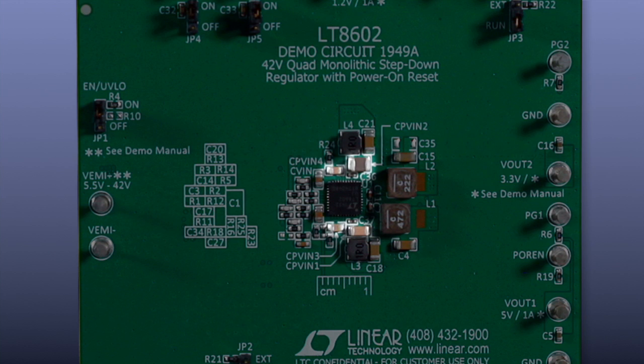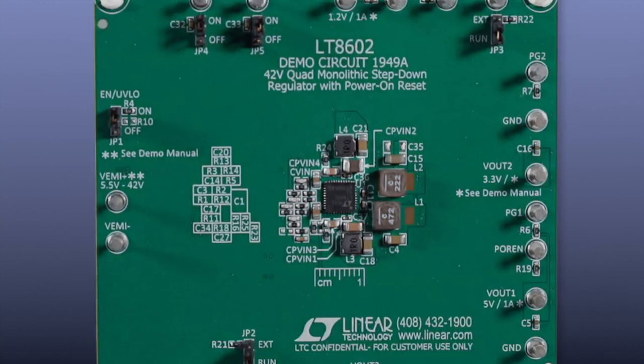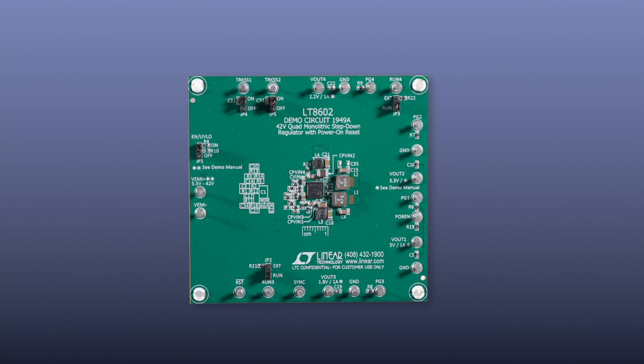Each PVIN pin has a decoupling capacitor placed on the same side and as close as possible to the LT8602. An unbroken ground plane occupies the second copper layer providing a short high frequency return path.